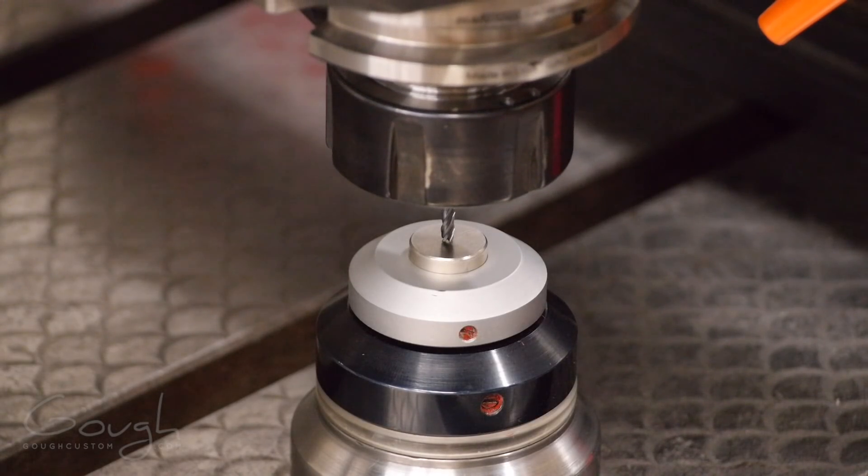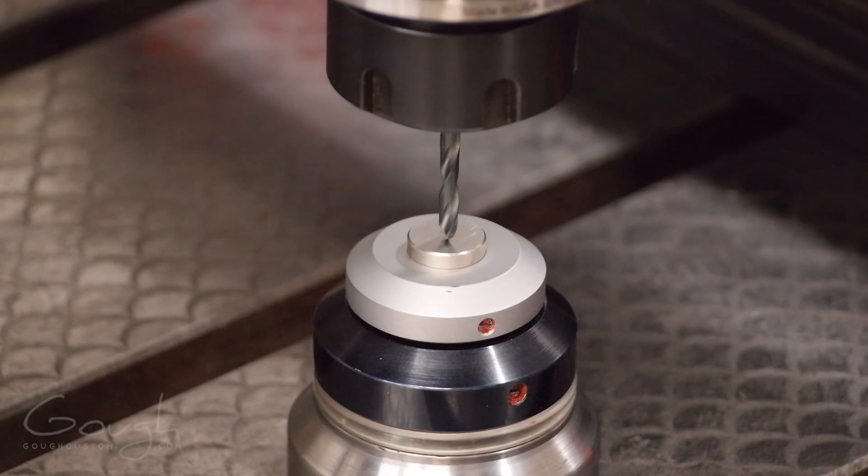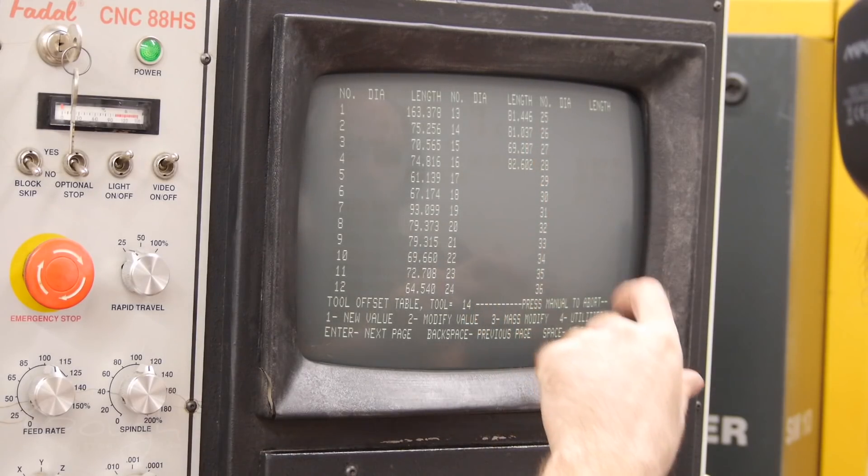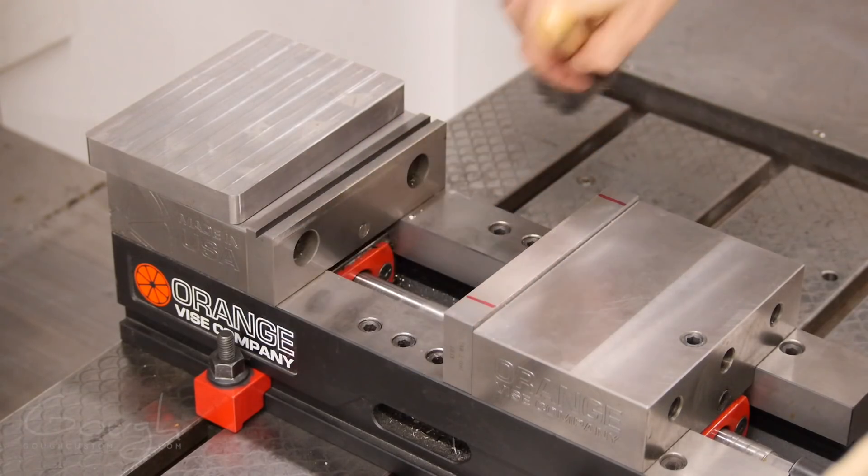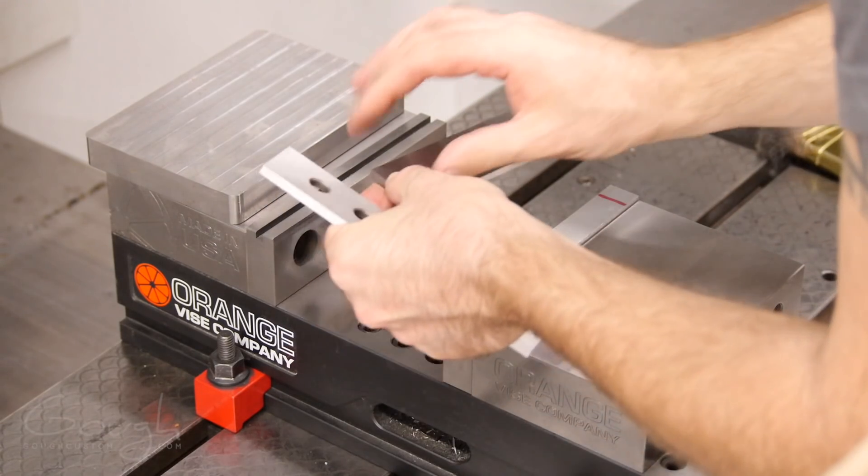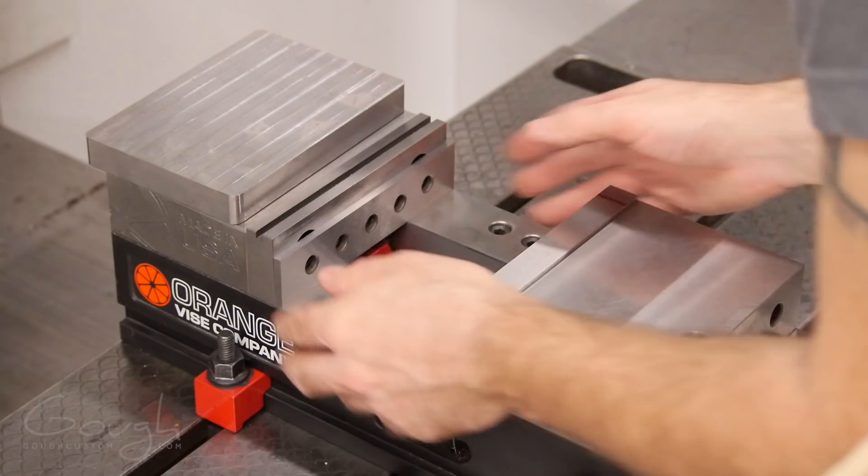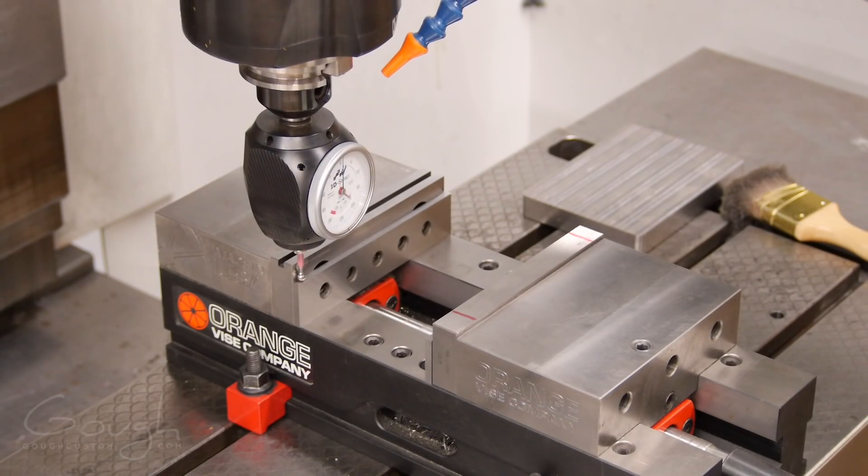As you can see there's a fair bit of work involved in setting up the CNC machine to make a part. This is the reason why making many parts is often more economical than just making one or two. With all of the tooling set up now I have to set up the workpiece. In this case I'm using a block of mild steel to make the fixture. The vise is carefully cleaned and then parallels are added to hold the block of steel up off the base of the vise.